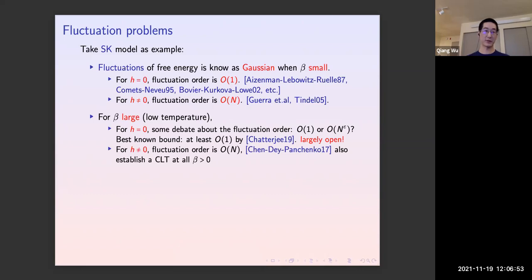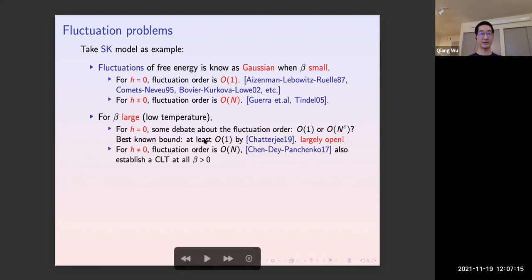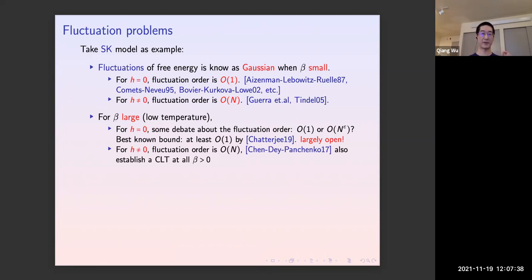For the SK model, fluctuation questions become very hard at low temperature because the SK model in the low-temperature regime exhibits full-step replica symmetry breaking — an infinite-order phase transition. For the spherical SK model with no external field, even the fluctuation order is unknown; the best lower bound is due to Chatterjee in 2019, proving the fluctuation order is at least constant. When the external field is present, beautiful work by Chen, Dey, and Panchenko in 2017, in a fairly generic mixed p-spin setting, proved that with external field the fluctuation order is linear at all temperatures, also deriving a central limit theorem via Stein's method.